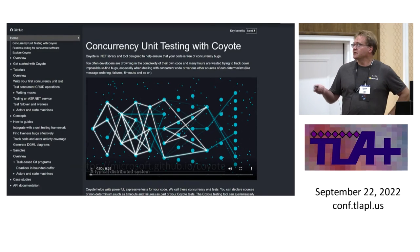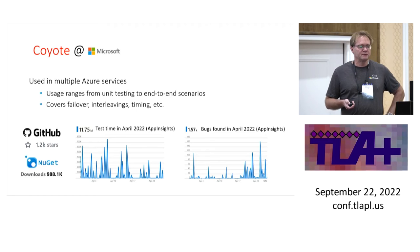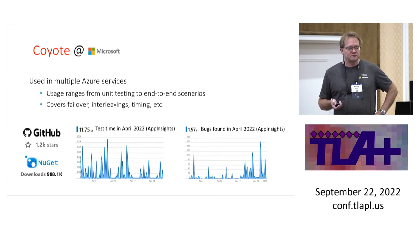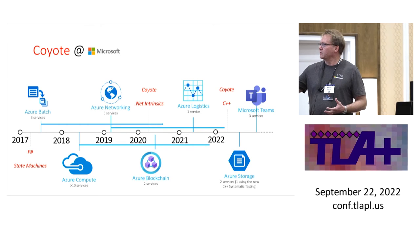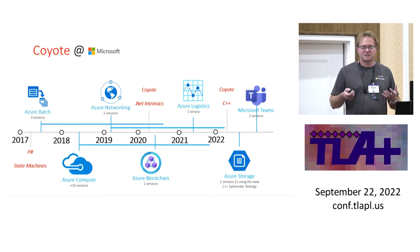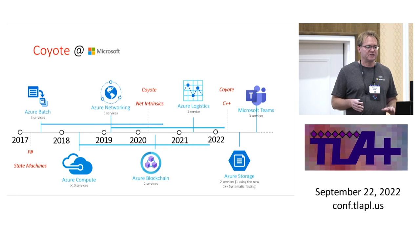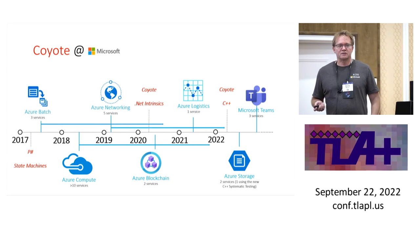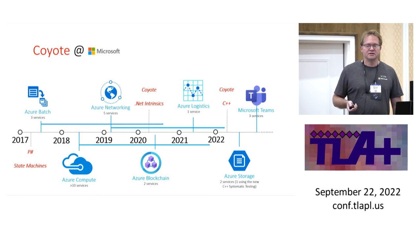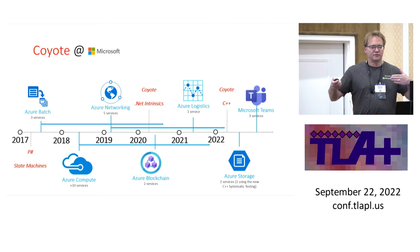Coyote is open source — here's a screenshot of the GitHub page — and it's been used in multiple Azure services. When you develop one of these services, you use Coyote as part of the design process; it's part of the code. It started out with P#, which was based on state machines. Coyote introduced support for .NET intrinsics so you didn't have to write things just using state machines. A newer version of Coyote is for C++ code — same technology but different surface level.